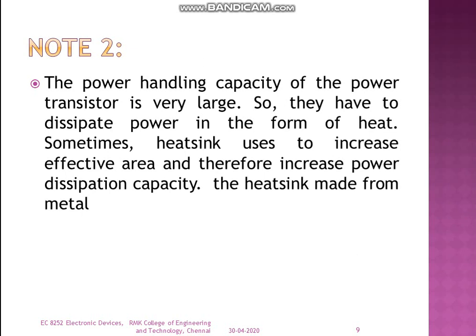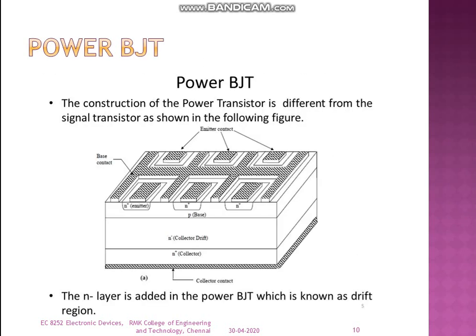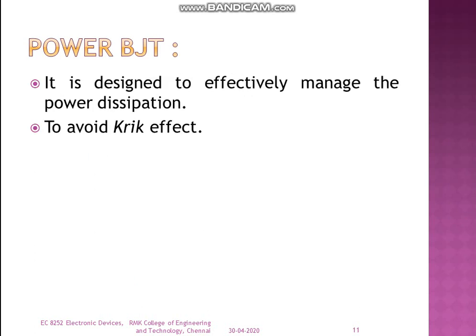Heat sinks are made from metal. Looking at the construction of the power BJT, you can see it has four layers. You can see how the emitters have been arranged from the top layer. An n-layer is added to the power BJT, which is known as the drift region. These drift regions are present in the layer above the base.